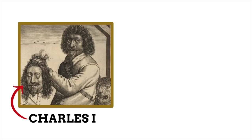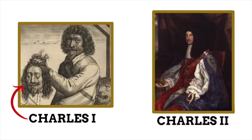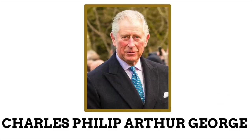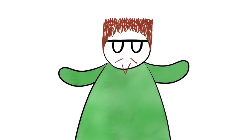King Charles the First is the only member of the British monarchy to be tried and executed for treason, and his son King Charles the Second was a renowned womanizer who ruled over Britain during the Great Fire of London and a rather bad plague outbreak. Charles's full name is actually Charles Philip Arthur George, and there have been rumors he may take on one of these middle names as his regnal name — possibly becoming King Philip, King Arthur, or King George instead.